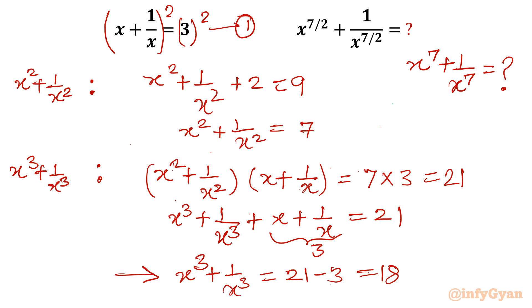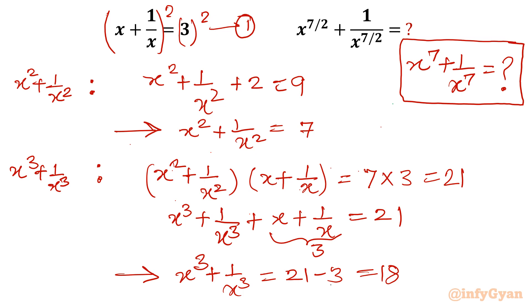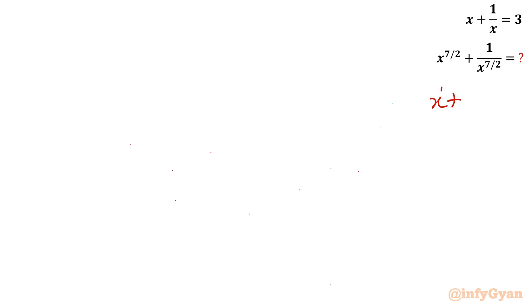Remember these results — we will utilize them. So far we have: x square plus 1 over x square equals 7, and x cube plus 1 over x cube equals 18.